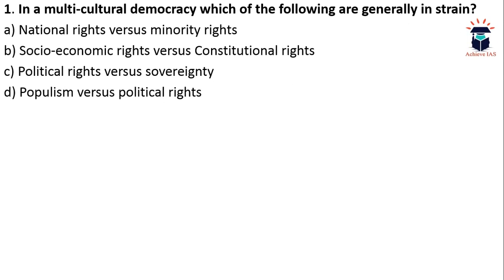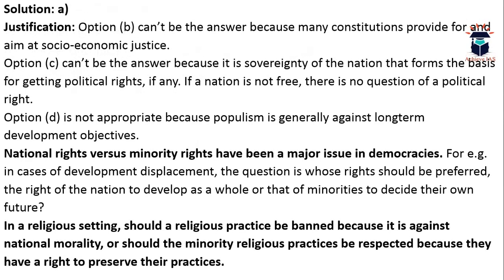The first question: In a multicultural democracy, which of the following are generally in tension? A) National rights versus minority rights, B) Socio-economic rights versus constitutional rights, C) Political rights versus sovereignty, D) Populism versus political rights. This is quite an easy question. India is a multicultural democracy, and such issues often come up in the news. The answer is A — national rights versus minority rights — because the majority community and minority community are always in some degree of tension.